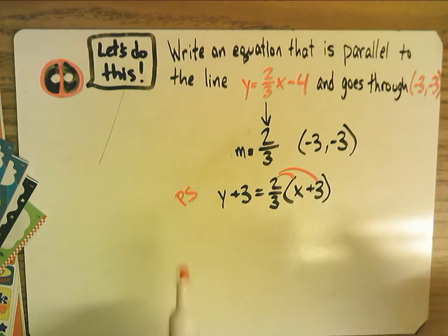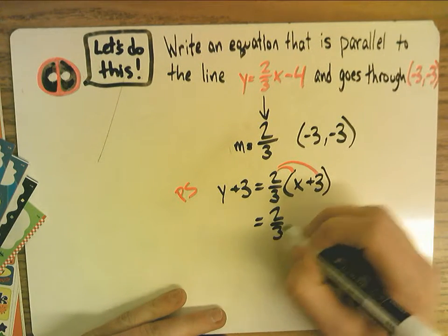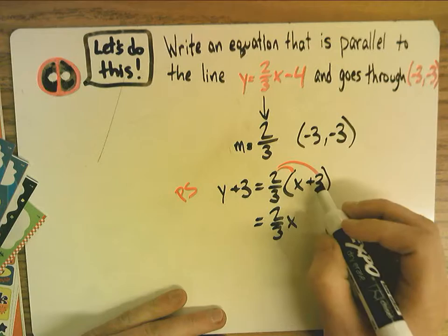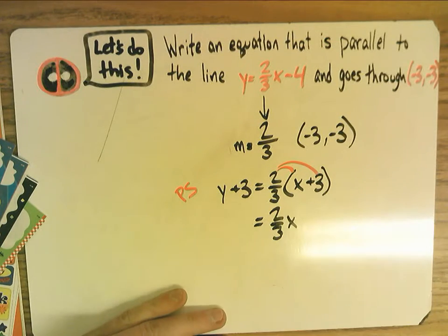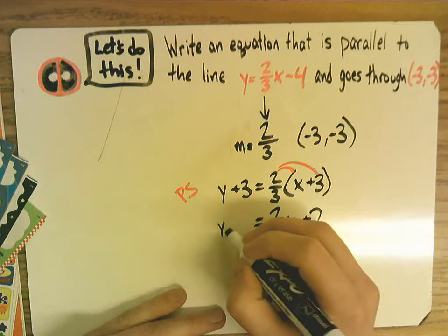So let's distribute first, and we get two-thirds x. If we have three, it's like three over one, and our threes cancel out, so it becomes plus two. This is still y plus three.